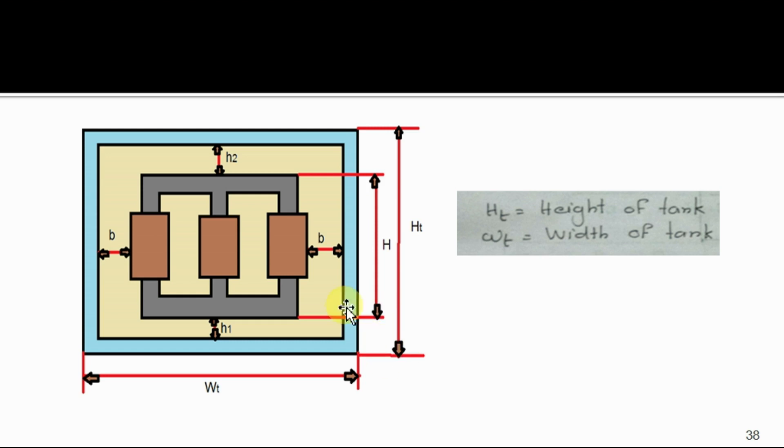b is the clearance space. Length of h1 and h2 can be different. Usually top h2 has high clearance.